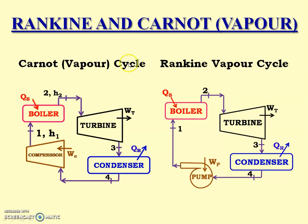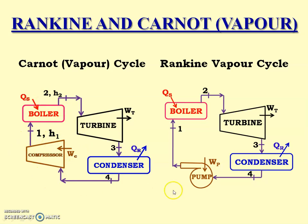Now, this is the flow diagram of Carnot vapor cycle, and this one is for Rankine vapor cycle. You can see: boiler, turbine, and condenser are common to both. But in Carnot vapor cycle there is a compressor, while in Rankine vapor cycle there is a pump.